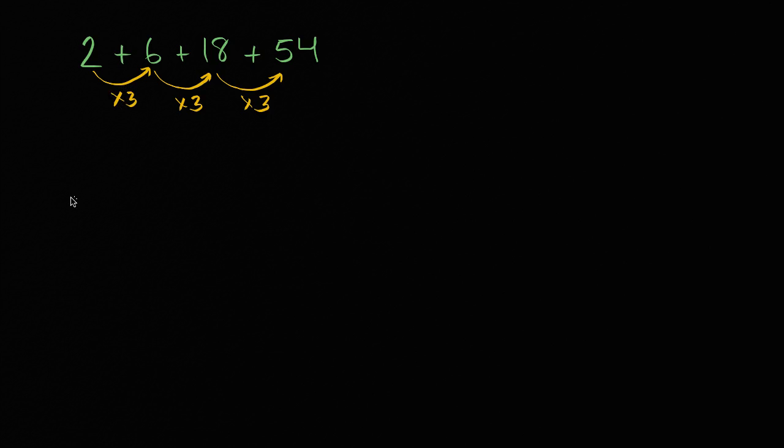So let's rewrite this using sigma notation. This is going to be the sum, and we could start, well, there's a bunch of ways that we could write it. We could write it as, let's start with k equals zero, and so we have our first term, which is two. So it's two times our common ratio to the kth power. So times our common ratio, three, to the k power.